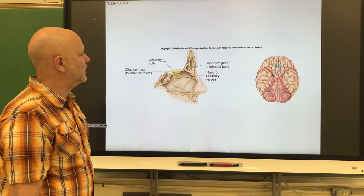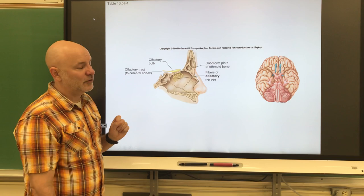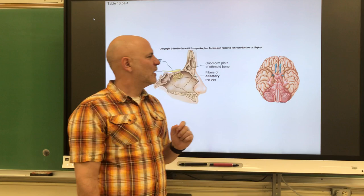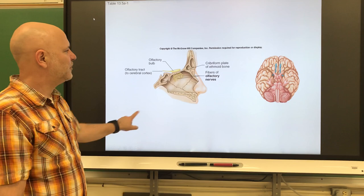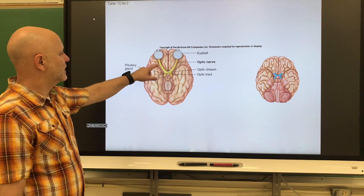The first cranial nerve is the olfactory nerve. We can see it in this picture — it goes through the cribriform plate of the ethmoid bone, and you see the olfactory bulb when you remove the brain. The olfactory nerves give us our sensory function for the sense of smell.